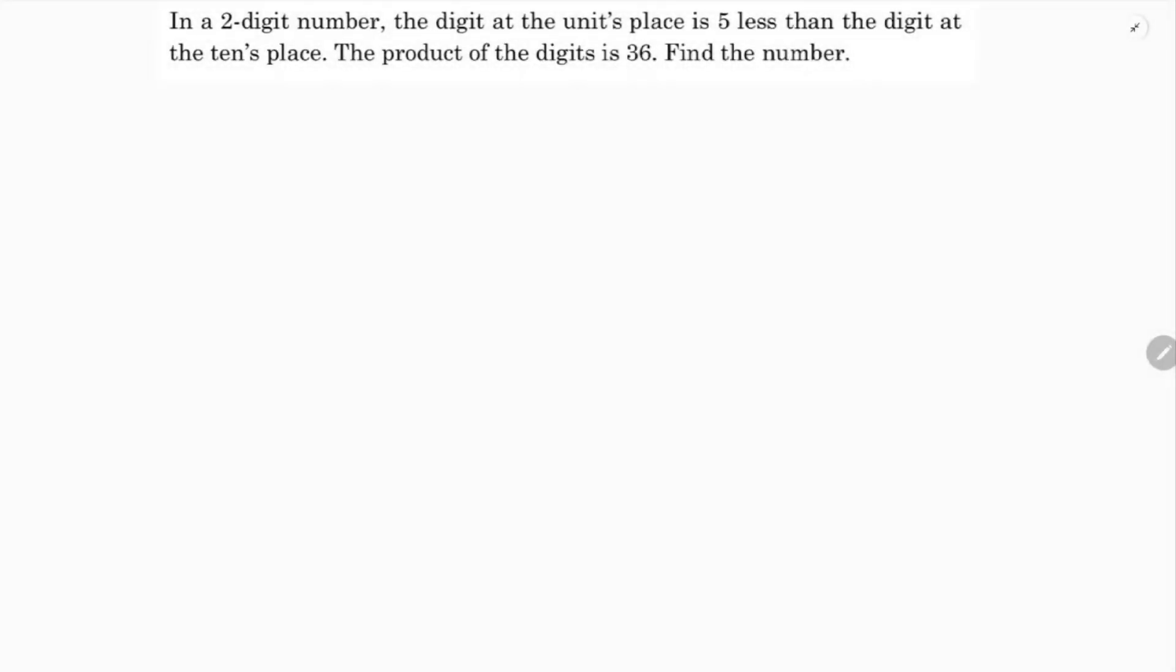In a two-digit number, the digit at units place is 5 less than the digit at tens place. The product of the digits is 36. Find the number.